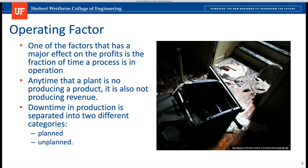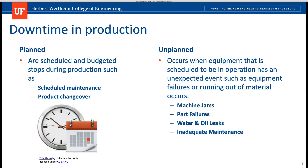Let me explore what the operating factor means. It has a major effect on profits because it takes into consideration the fraction of time a process is in operation. Any time a plant is not producing a product, it is also not producing revenue. Downtime in production is separated into two categories: planned and unplanned. Planned stops are scheduled and budgeted — such as scheduled maintenance and product changeovers.